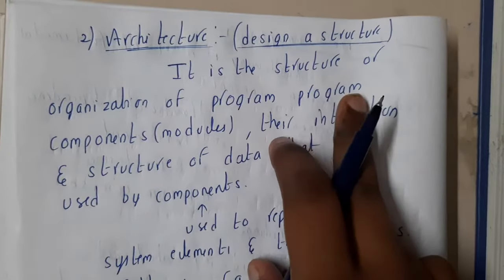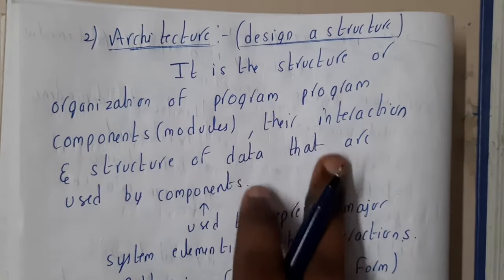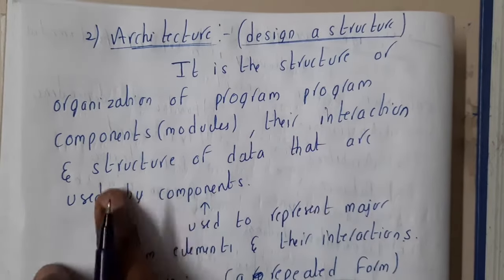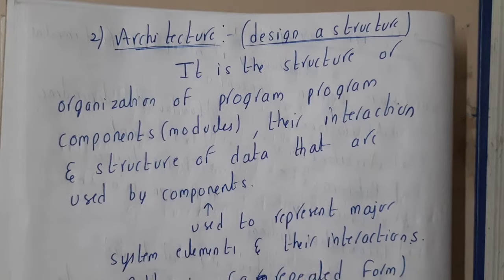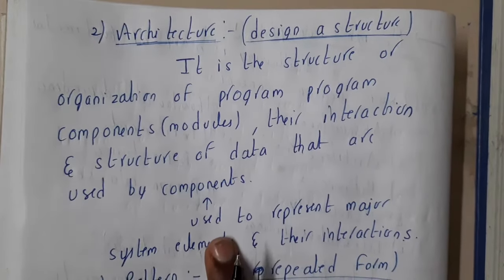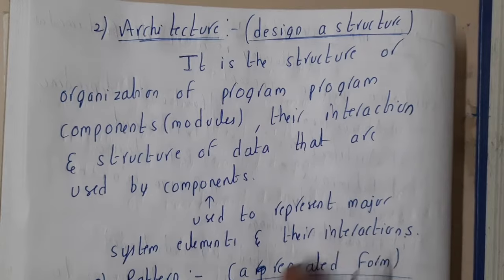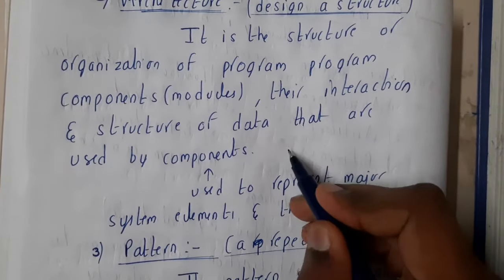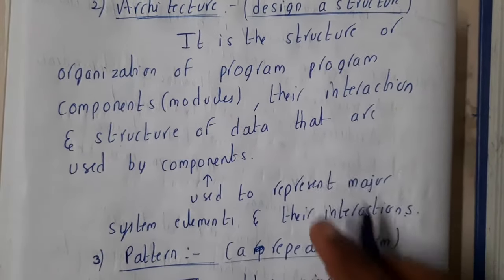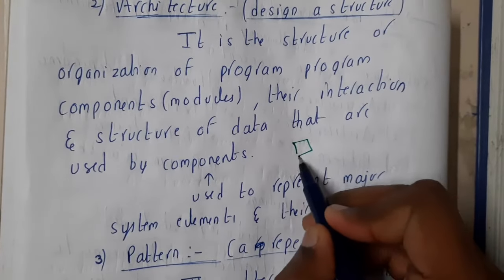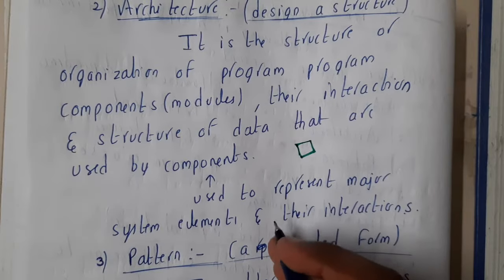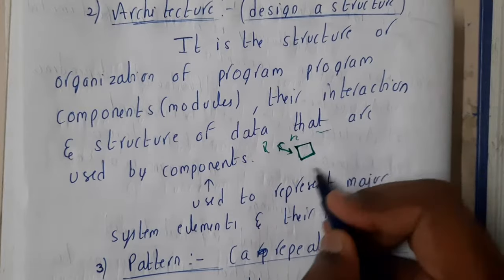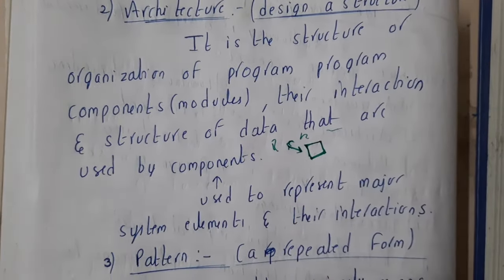Similarly, architecture is nothing but designing a software. It is the structure or organization of program components like modules. There is an interaction and structure of data used by those components. The components are used to represent major system elements and their interactions. Basically, there are multiple architectures — one of the most popular is data-driven or data-centered architecture, where data is in the center and all the clients are around it.